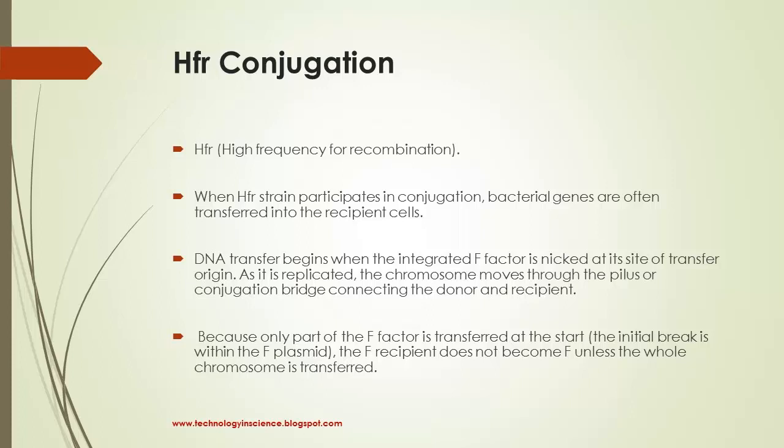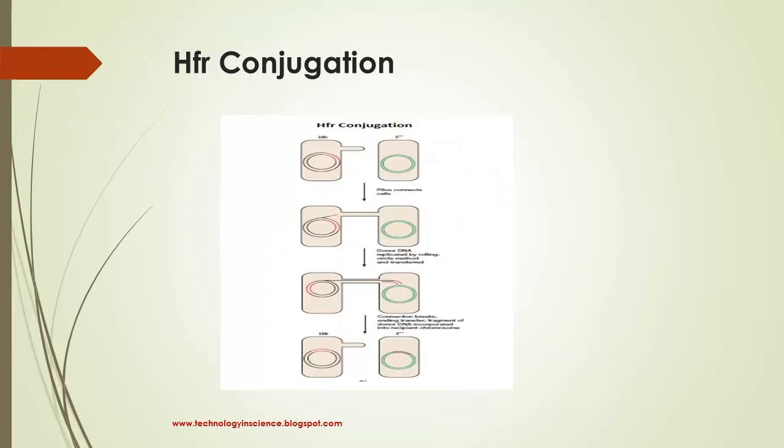Such donor is called an HFR strain because it exhibits a very high efficiency of chromosomal gene transfer in comparison with F plus cells. DNA transfer begins when the integrated F factor is nicked at its site of transfer origin. As it is replicated, the chromosome moves through the pilus or conjugation bridge connecting the donor and recipient.